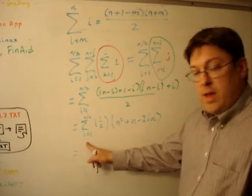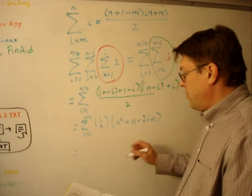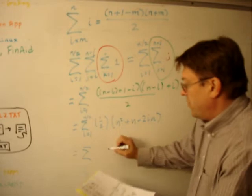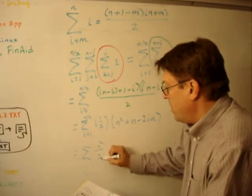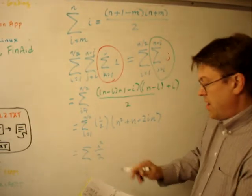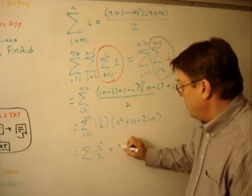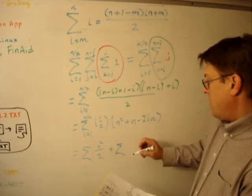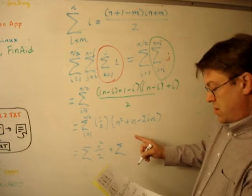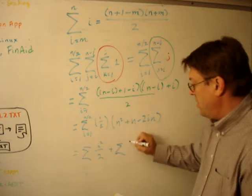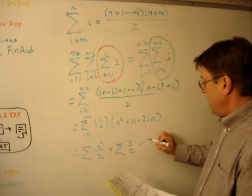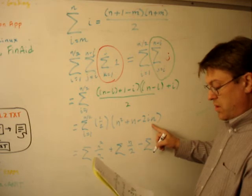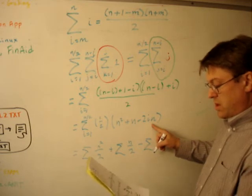Since the summation can be broken up with the equation, you can actually put this like this. This first term is going to be n squared over 2. I'm not going to write out all that part of it. This one's going to be plus the sum of n over 2. See, n over 2. And then minus the sum of 2in over 2, which is just in.